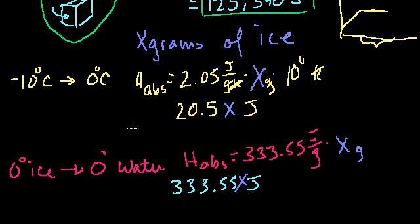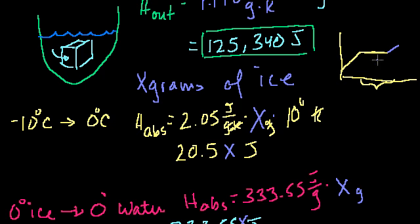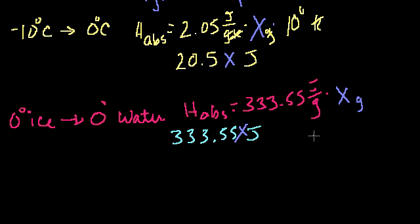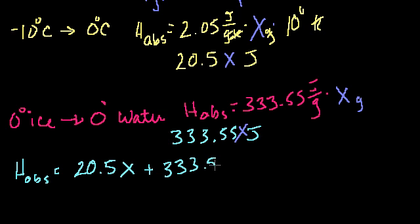So the total amount of heat that the ice can absorb without going above 0 degrees is the heat it can absorb when it goes from minus 10 to 0 degrees ice, that's 20.5x, plus the amount of heat we can absorb as we go from 0 degree ice to 0 degree water, and that's 333.55x. So this is the total amount of heat that the ice can absorb without going above 0 degrees.